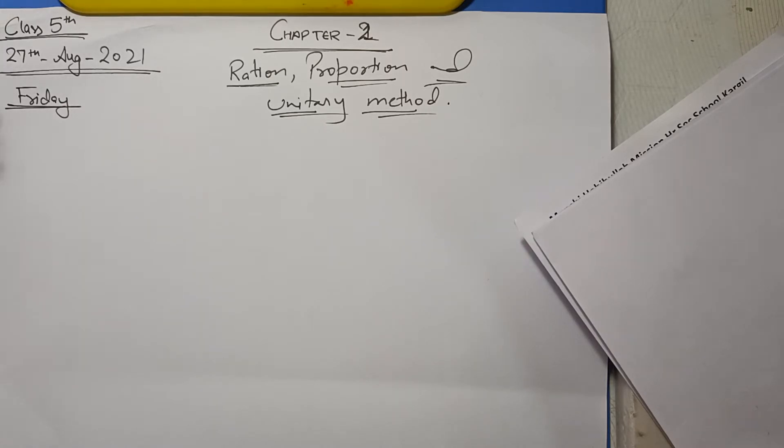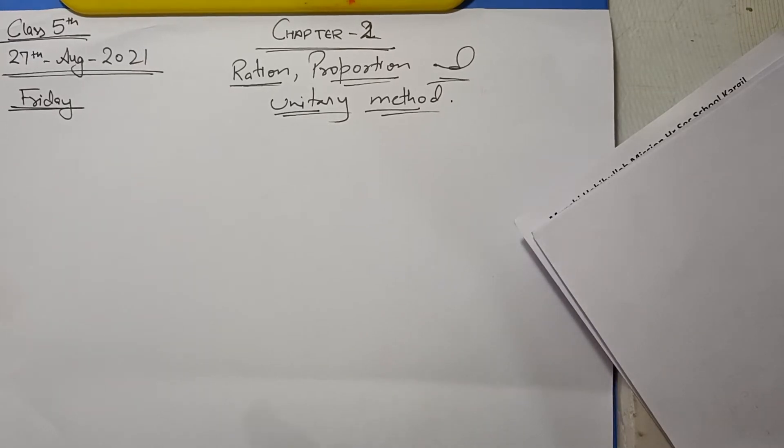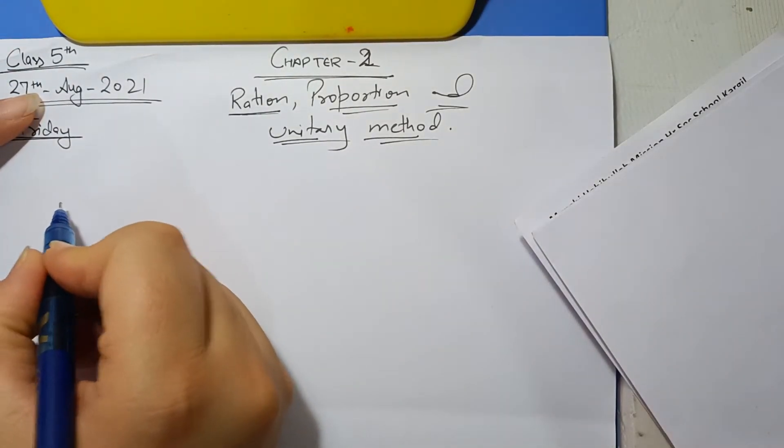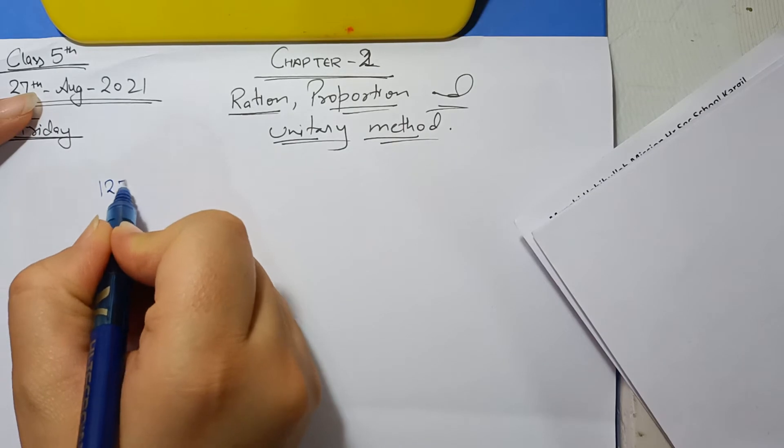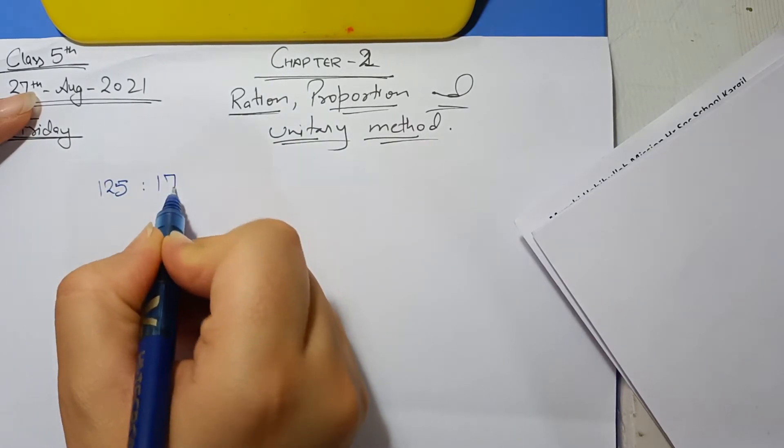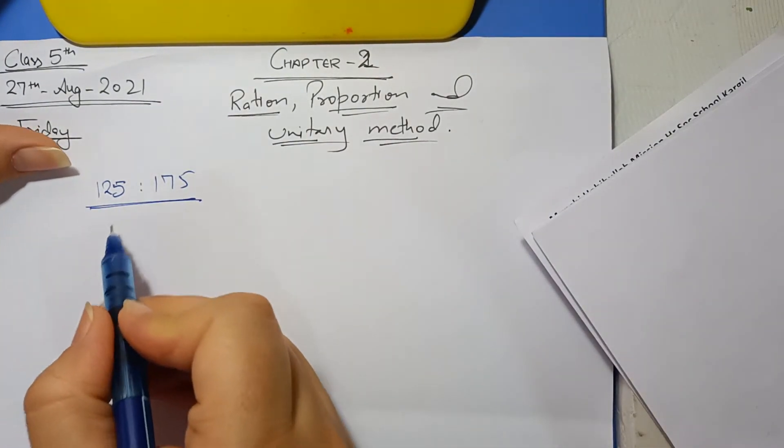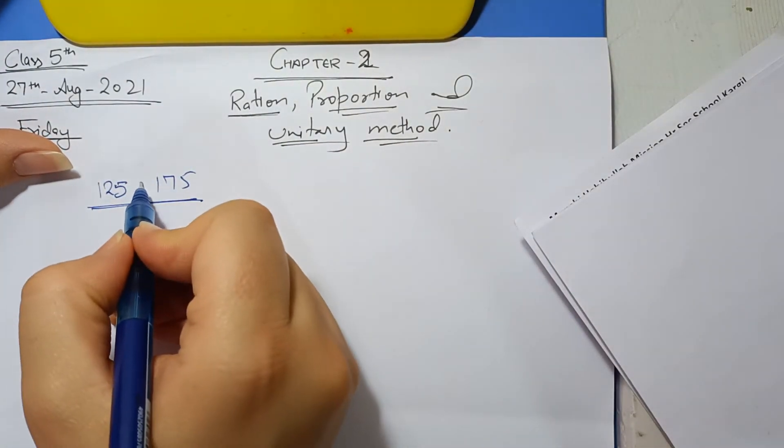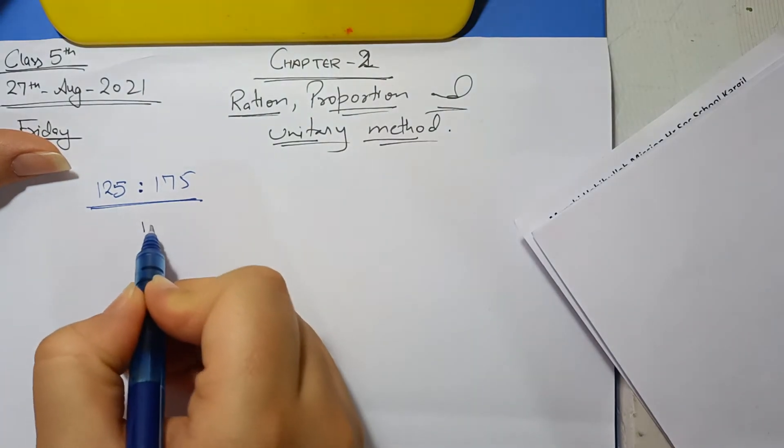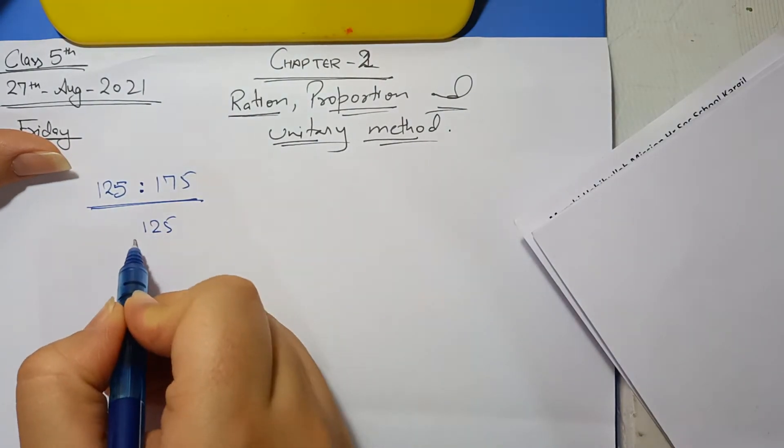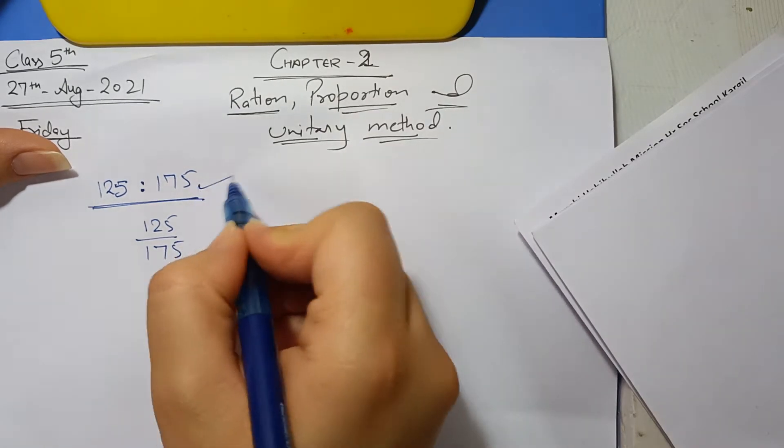Today we are starting our second chapter. In the first exercise, we have to learn how to convert the ratio in the simplest form. Suppose I have taken a number here: 125 is to 175. This is the first example. The ratio here, we can also write it in this way: 125 upon 175.